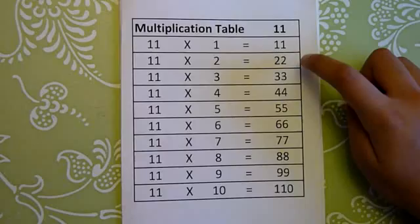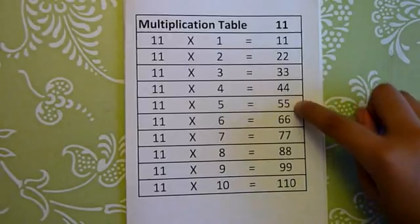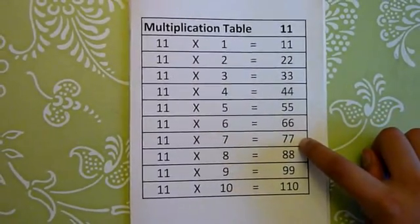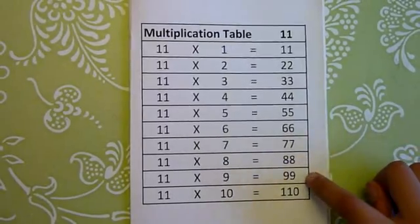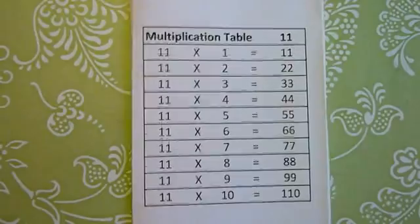11 1s are 11, 11 2s are 22, 11 3s are 33, 11 4s are 44, 11 5s are 55, 11 6s are 66, 11 7s are 77, 11 8s are 88, 11 9s are 99, 11 10s are 110. Now we'll go to multiplication table 12.